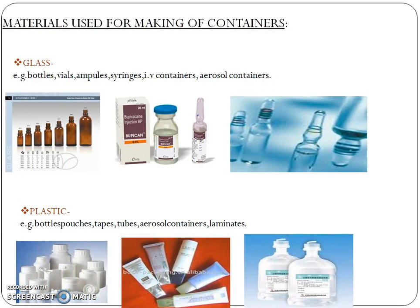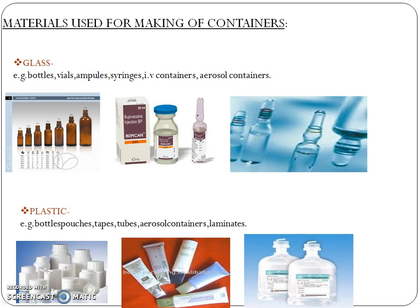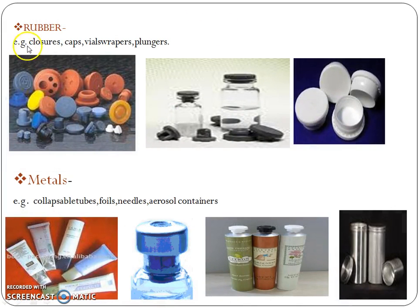Materials used for making containers include glass — examples are bottles, vials, ampoules, syringes, IP containers, and aerosol containers. Plastics are used to make plastic pouches, tubes, tapes, aerosol containers, and laminates. Rubber is used to prepare closures, caps, vial wrappers, and plungers.